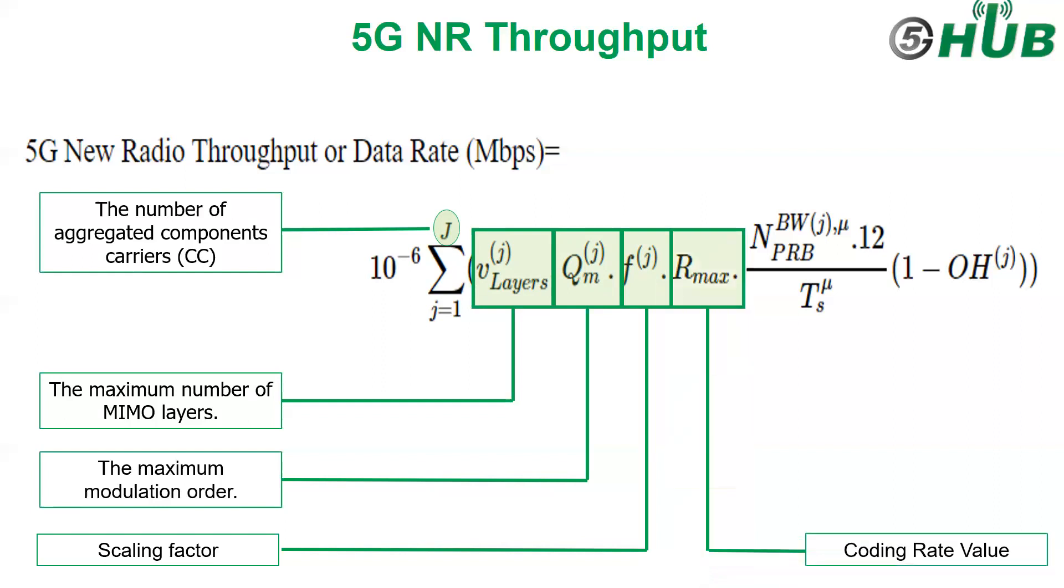Now we will talk about R_max. R_max value depends on the type of coding. For LDPC code, the maximum number is 0.925 or 948 divided by 1024. This is from the 3GPP modulation code scheme index table.